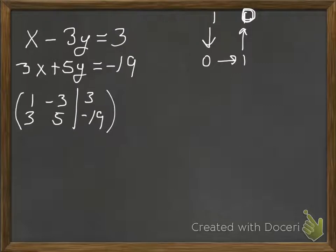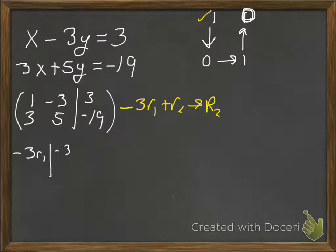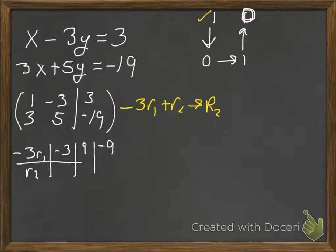That's the procedure we're going to follow, and it'll give us the minimum number of steps. We got the 1 in row 1, column 1 for free. To make everyone else in column 1 a 0, we use row 1 with the opposite of the 3 there, which is negative 3. So we do negative 3 times row 1 plus row 2, replacing row 2. That gives us negative 3, 9, negative 9 for negative 3 row 1, and adding row 2 (3, 5, negative 19) straight down.